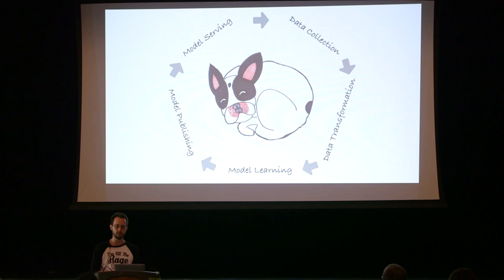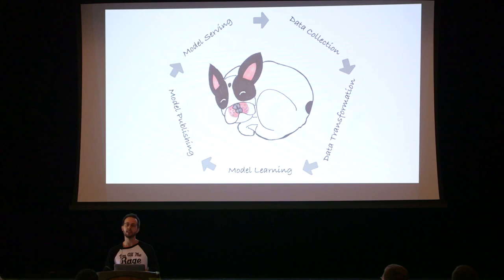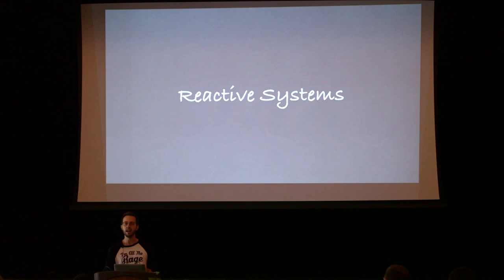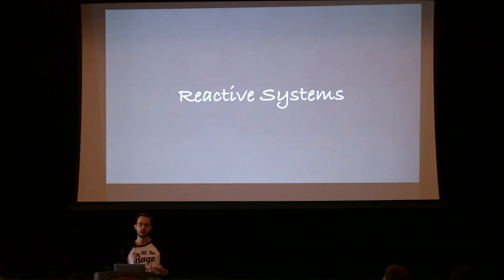I'm going to build up a full machine learning system, and this will be our organizational device for this talk. These are the five phases I've conceived of for a machine learning system. We're going to go around this diagram, talk about each component in turn, and discuss how we can build our system to predict how to achieve amazing levels of celebrity for my dog, Nom Nom. But we're not going to do it in an unprincipled manner. One of the key components I want to talk about is a reactive approach to machine learning.